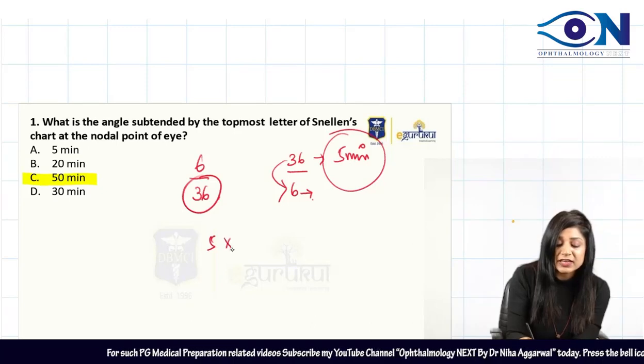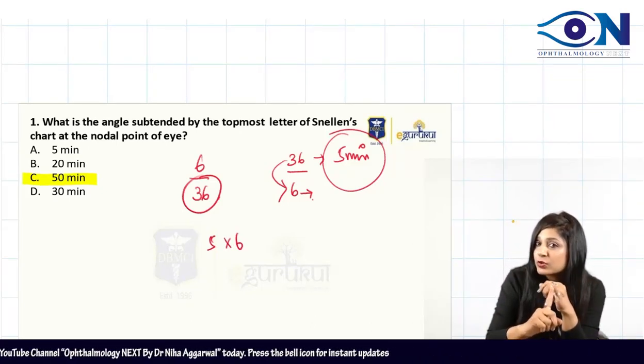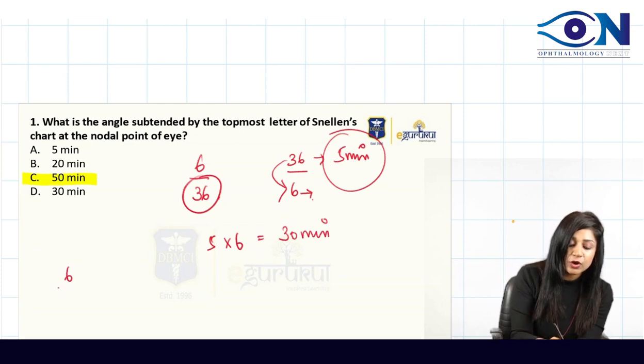So 5 minutes into 6 – this much you can do. 36 upon 6 you can do orally, and 5 into 6 also we can do orally. This is 30 minutes.